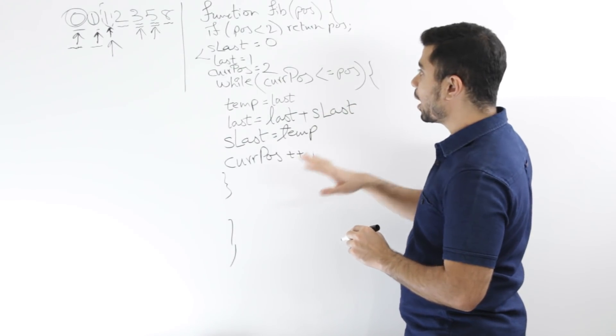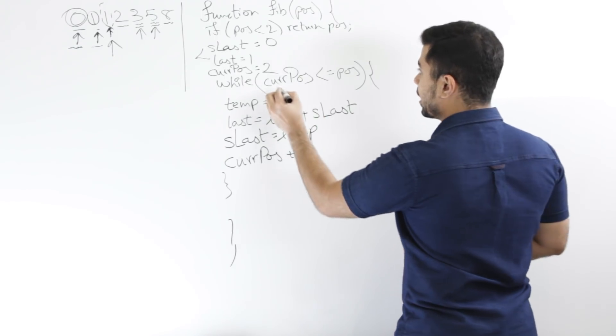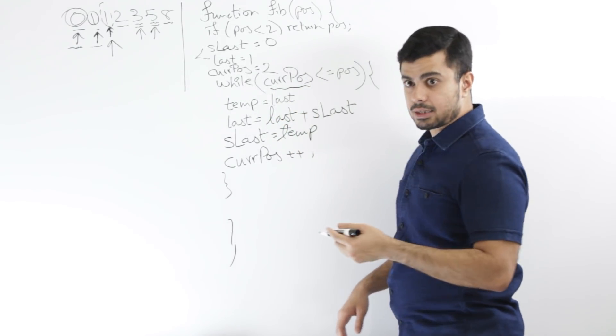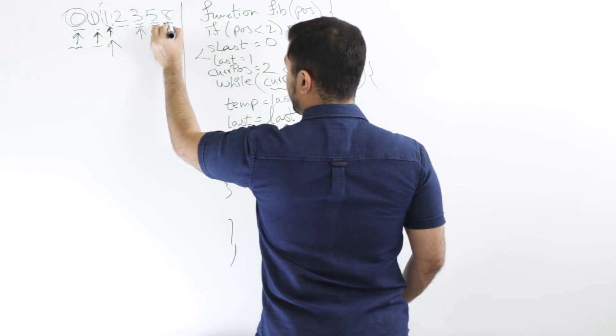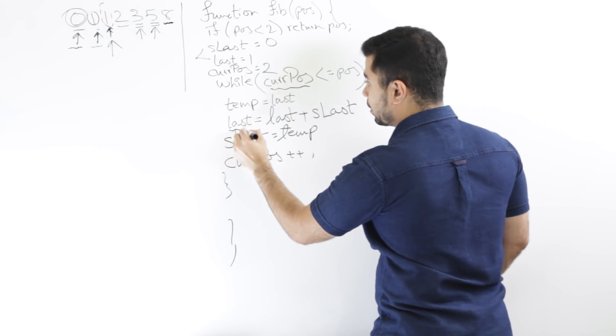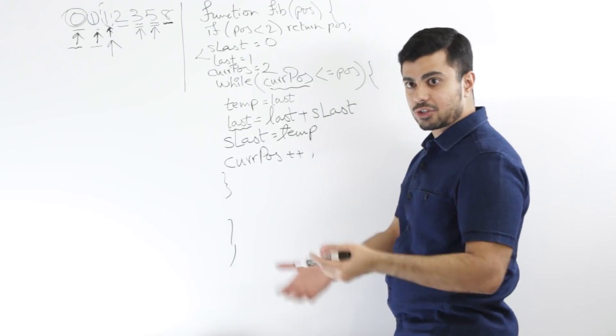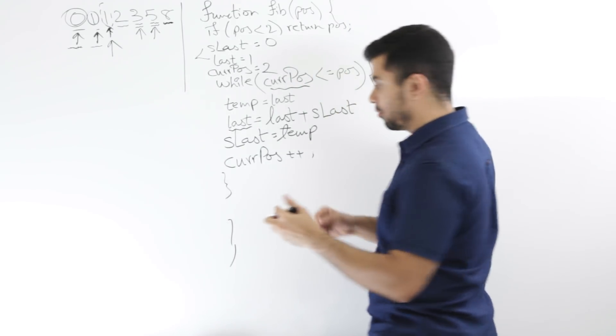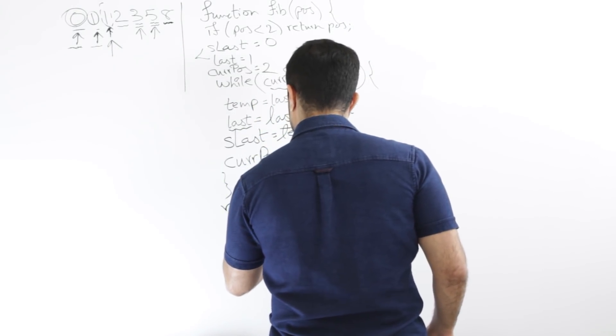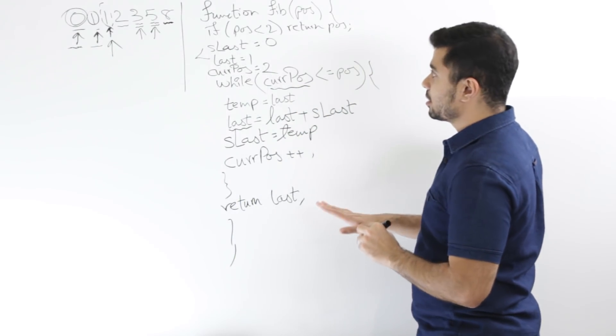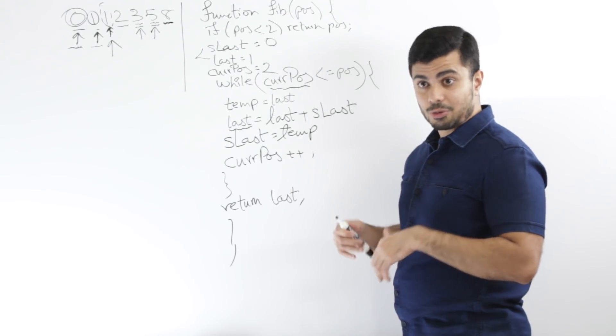So at the end of the while loop, I will have my value. Let's say current position is six, right? So it's still less than or equal to the position. So I'm over here and at the end of it, I will be updating my last value, right? So at the end, whatever is my last value is the answer that we're looking for. So I'll just say return last and we're done. So this would still be a linear time, but it would be constant space.